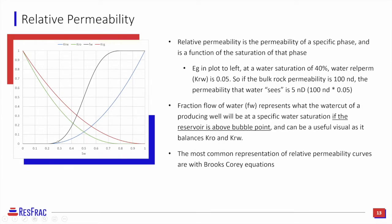If we look at a water saturation of 40%, the relative permeability of water shown by the blue curve would be about 0.05. So if bulk permeability was 100 nanodarcies, the effective permeability to water is 5 nanodarcies — 0.05 times 100 nanodarcies.